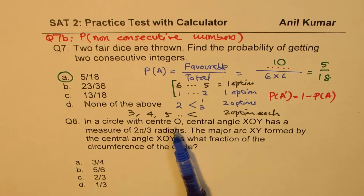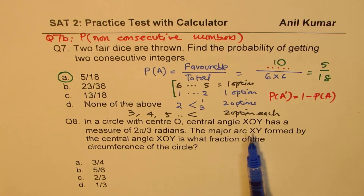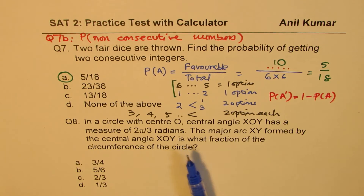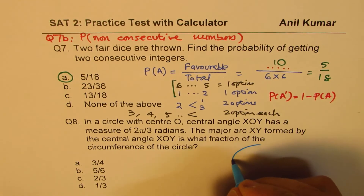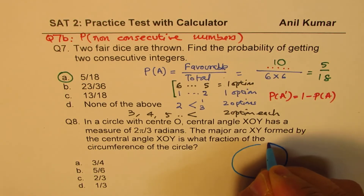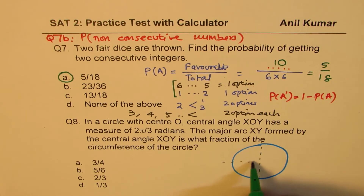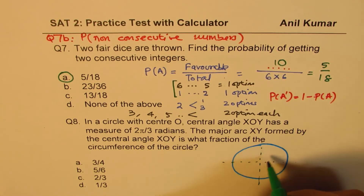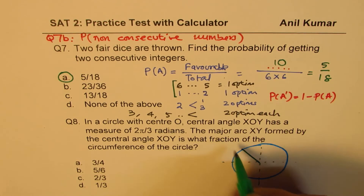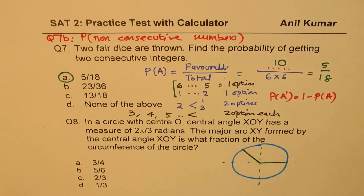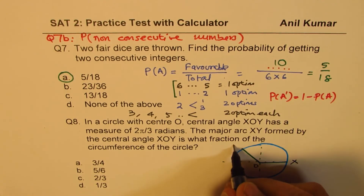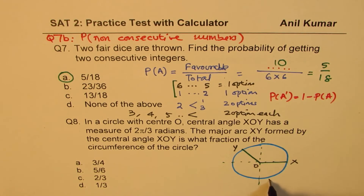Question 8: in a circle with center O, central angle XOY has a measure of 2π/3 radians. The major arc XY formed by this central angle — what fraction of the circumference is it? Let's sketch the circle. The angle 2π/3 means we divide π into three equal parts and take two, giving a minor arc. The remaining arc is the major arc.